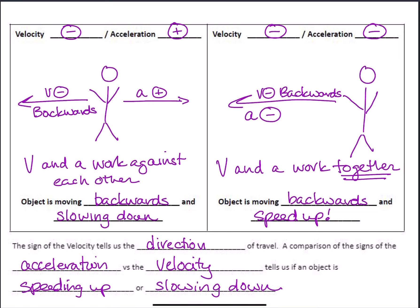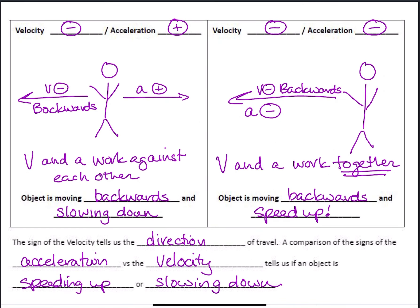That's it for our look at velocity and acceleration. We're going to be talking a lot more about these concepts in class and doing quite a few labs measuring distance, time, velocity, and acceleration. We'll be using motion detectors and graphing motion to see what those graphs look like, and then we'll learn how to use those graphs to describe what's going on. We'll also do some calculations. Everything you need in terms of notes is in these three sets of notes, so make sure you've filled everything in and keep them in your binder.